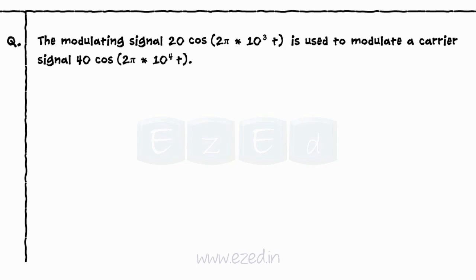Consider an example now. The modulating signal 20 cos(2π × 10³ t) is used to modulate a carrier signal 40 cos(2π × 10⁴ t).